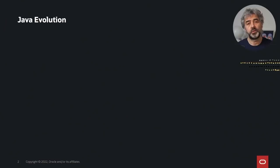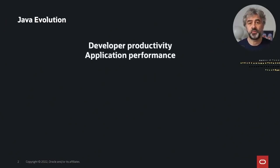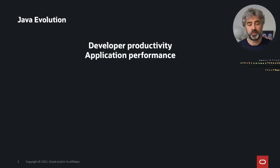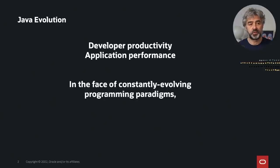Before we do so, I'd like to quickly look at the evolution of Java. Java is 27 years old, and Java has evolved since then based on two core tenets. One, developer productivity — it has to be simple to write and maintain Java code. And then, application performance — it has to be simple to write performant applications. In Java 8, Java started to adopt a more functional approach with lambdas.